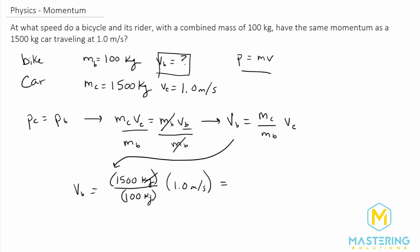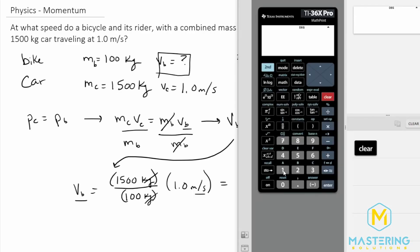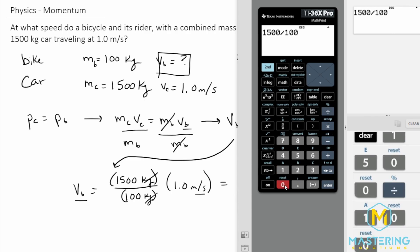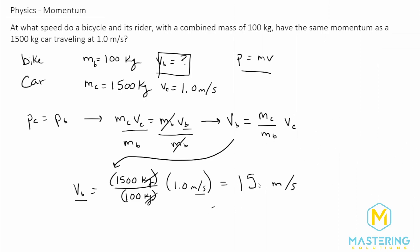So the kilograms are going to cancel out, leaving us with meters per second. We know that we're in the correct units because we're looking for a velocity. So we can be confident that we've done the math correctly. Now if we pull up our calculator and plug this in, we have 1500 divided by 100 is going to be 15. If we multiply that by one meter per second, we end up with 15 meters per second, which is the answer.